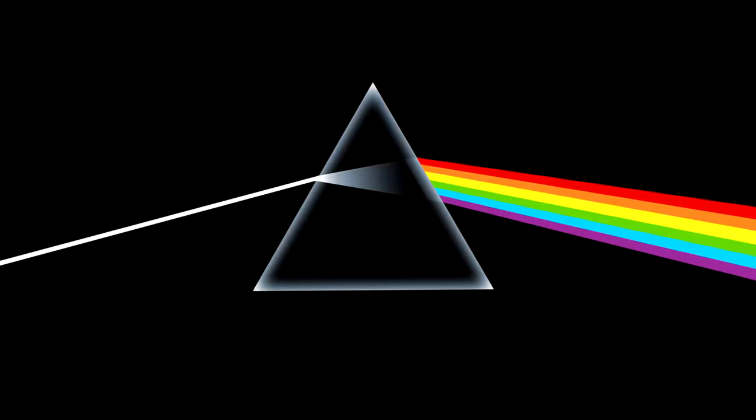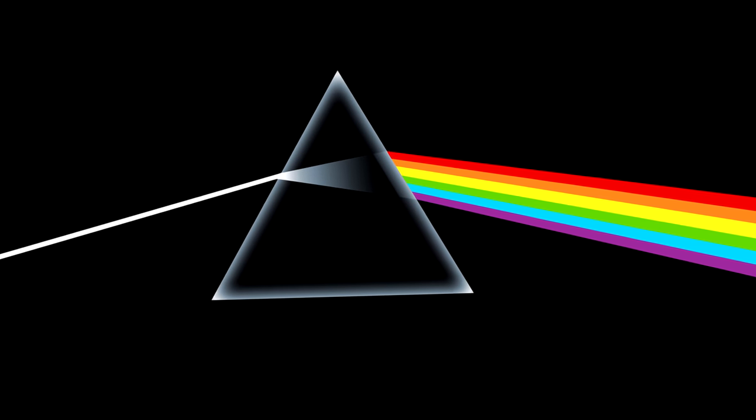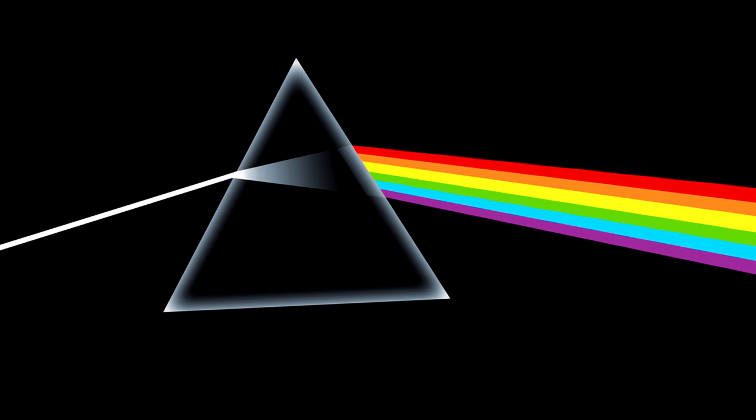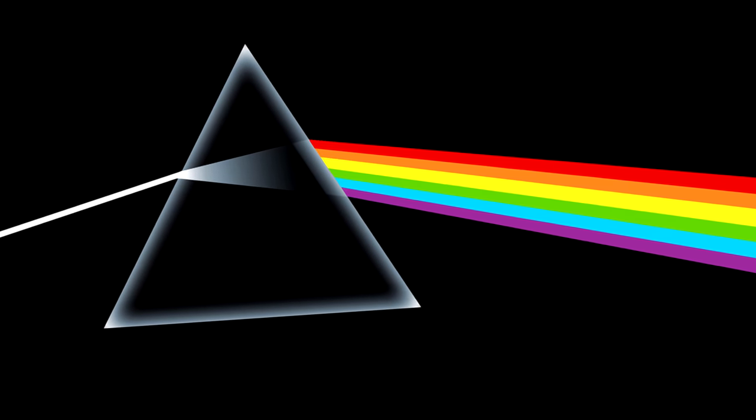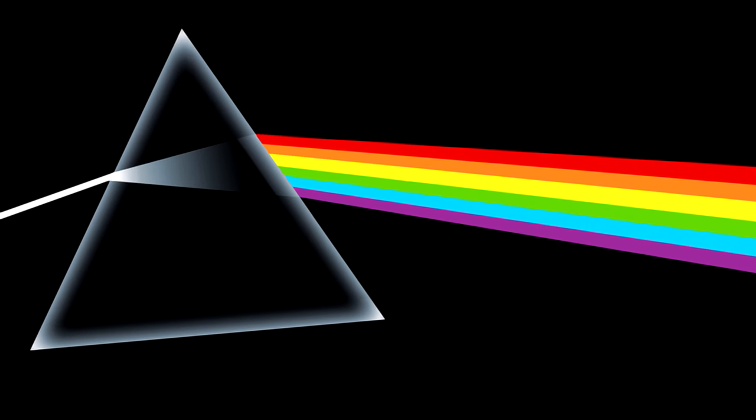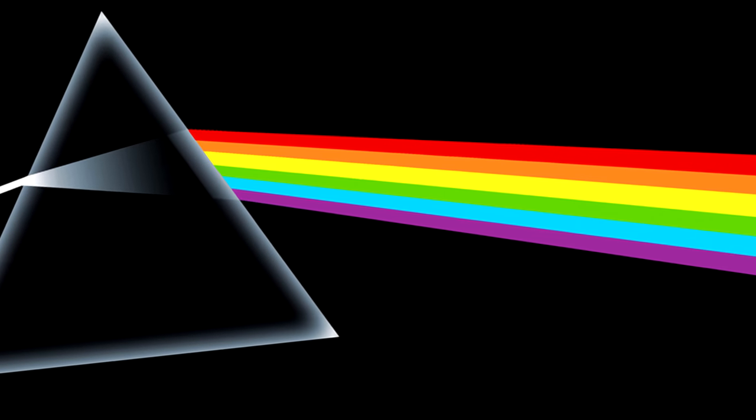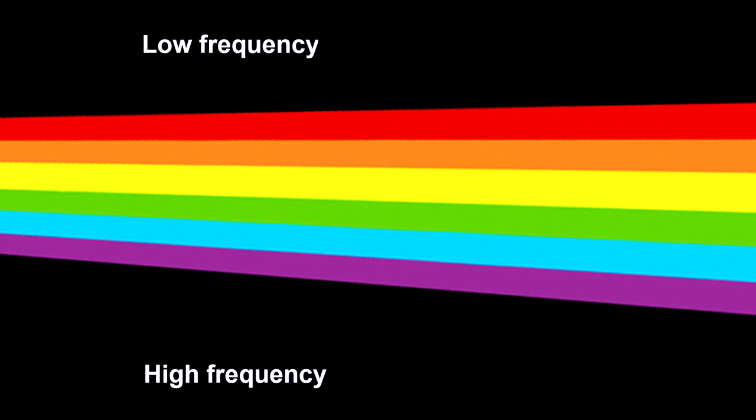Newton showed that the sun's light can be dispersed into the colors of the rainbow with a crystal. This effect comes from the wave nature of light. Different colors represent different light frequencies. The higher the frequency, or inversely, the shorter the wavelength, the more it's bent by the crystal.